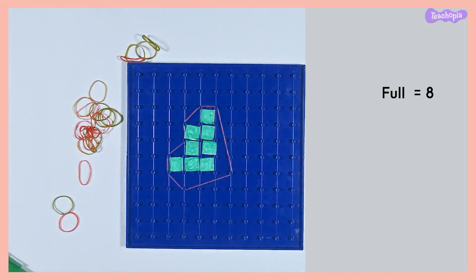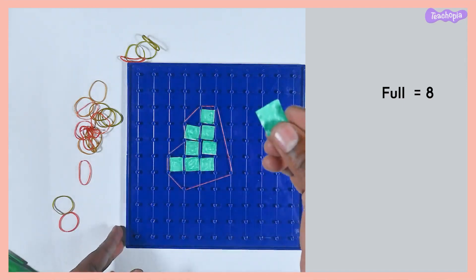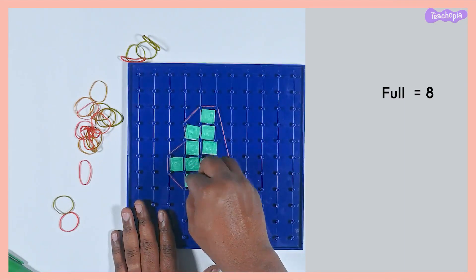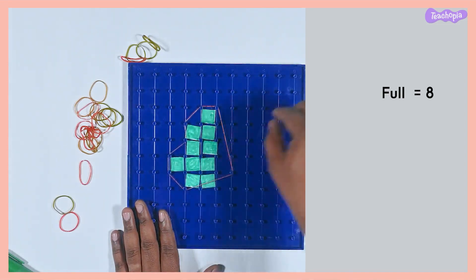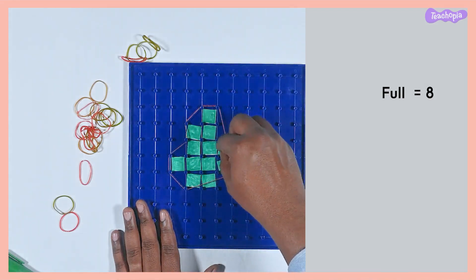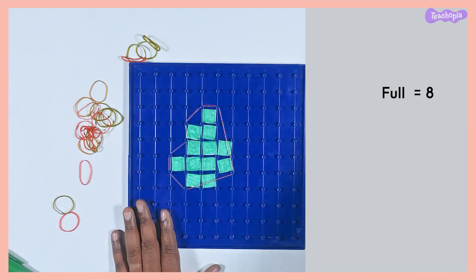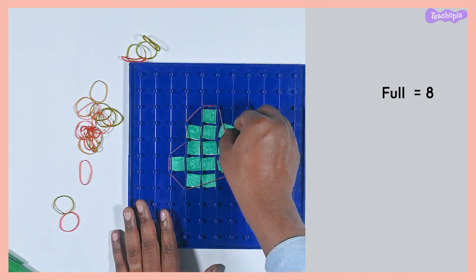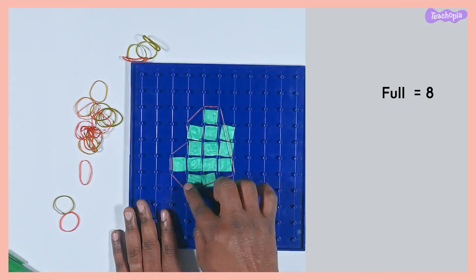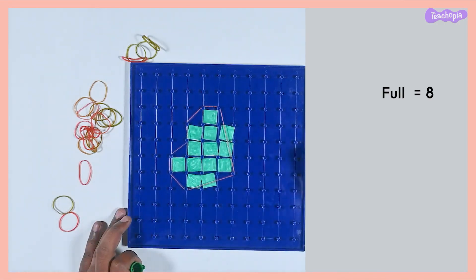Now I will see how many more than half squares there are. If I have a more than half square, I will use the same piece of paper, as it is also counted as one centimeter square. So I have one here, one more here, one more here, one more here, and one more here. So I have five more than half squares.